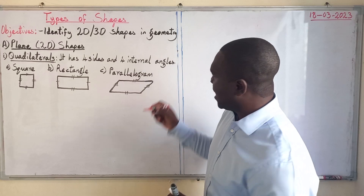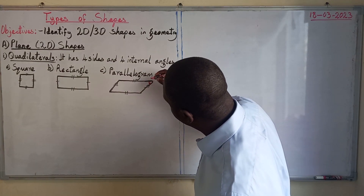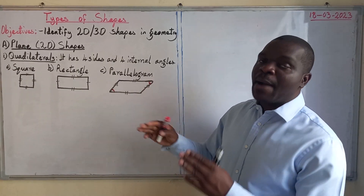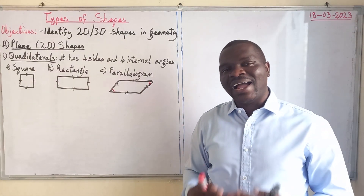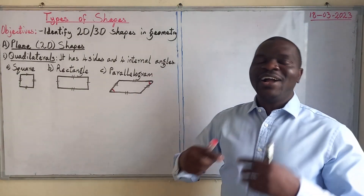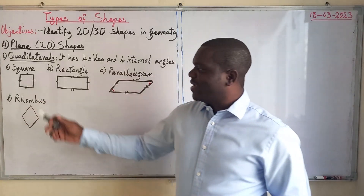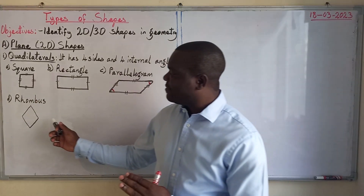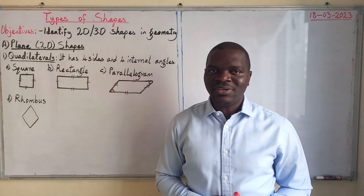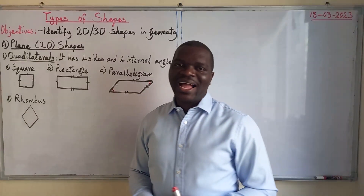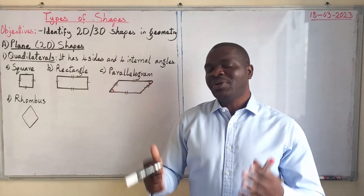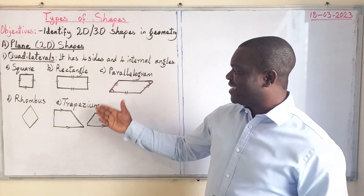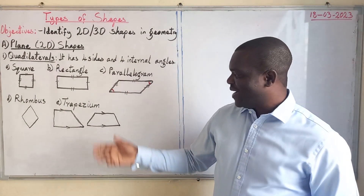The next shape is a parallelogram. Its opposite angles are equal, and its opposite sides are parallel and congruent. The fourth quadrilateral is called a rhombus — a rhombus has all sides equal, and its opposite angles are also equal.